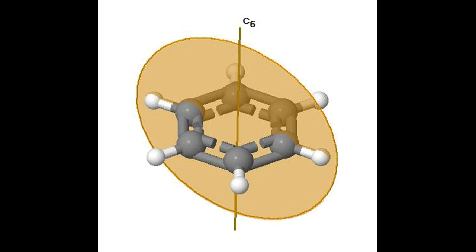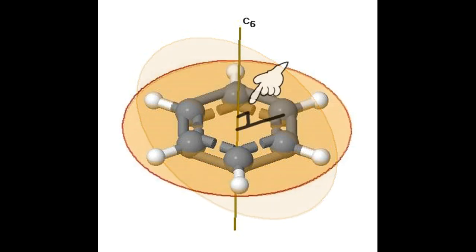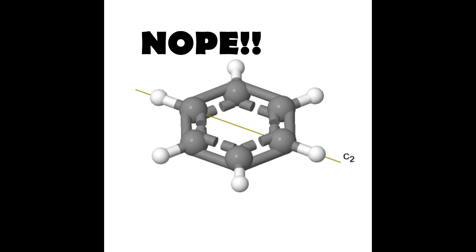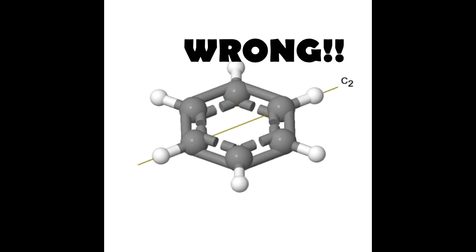How about horizontal mirror planes? Well, if you look at this one, the axis is perpendicular to the plane. So yeah, that's just about where the principal rotation axis sits compared to the mirror plane. You've got to be careful here. There's not any axis. It has to be the principal rotation axis.